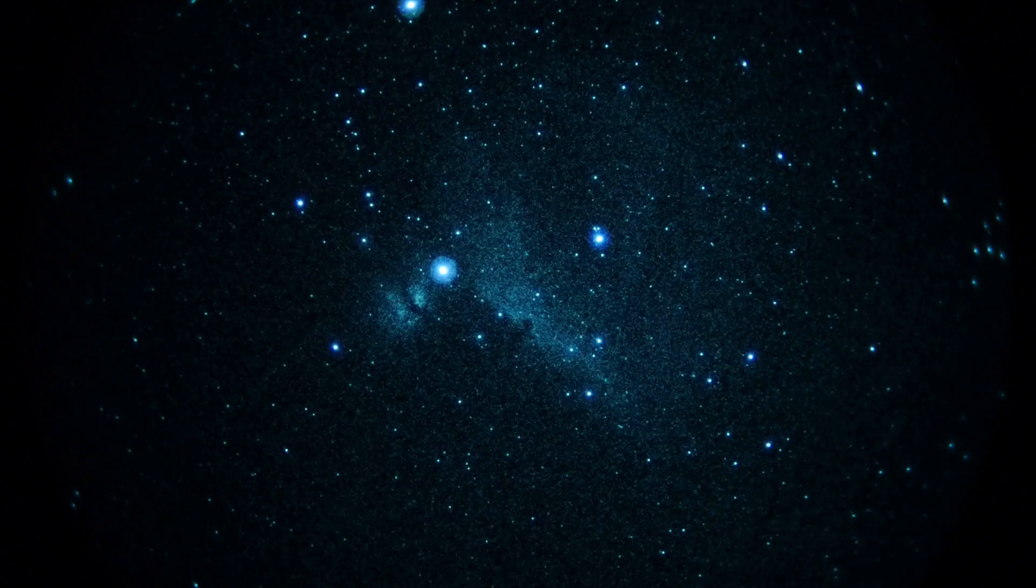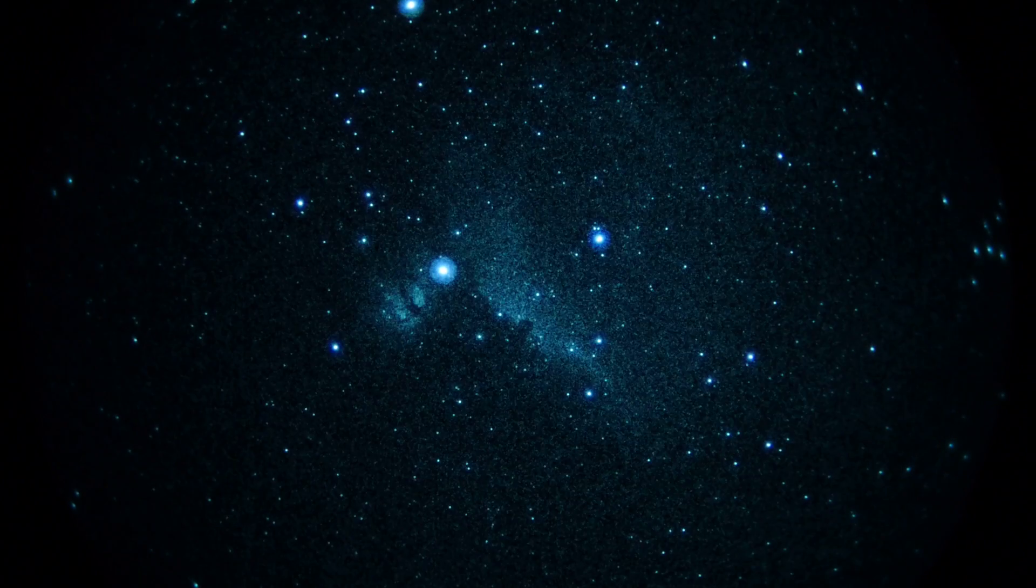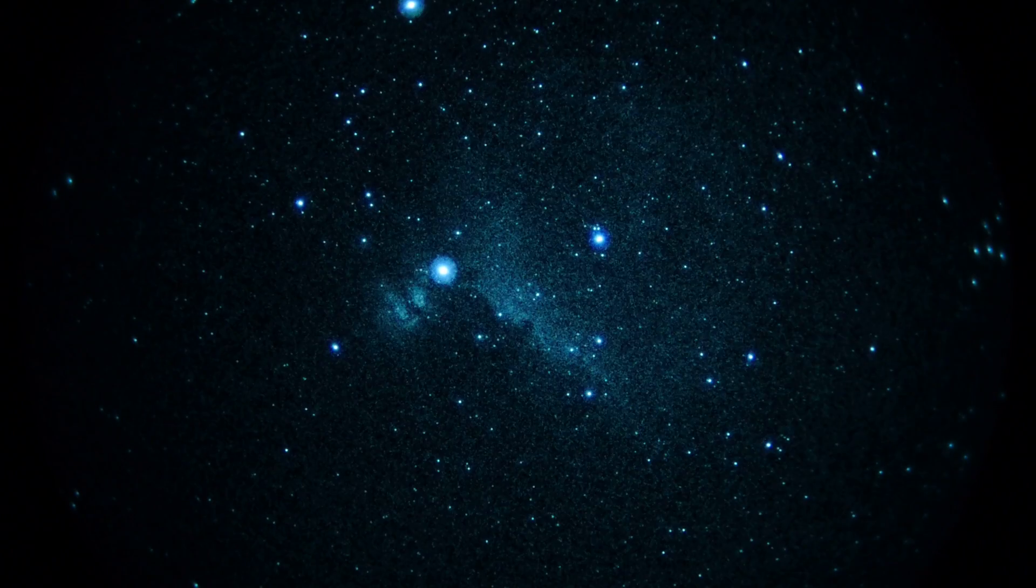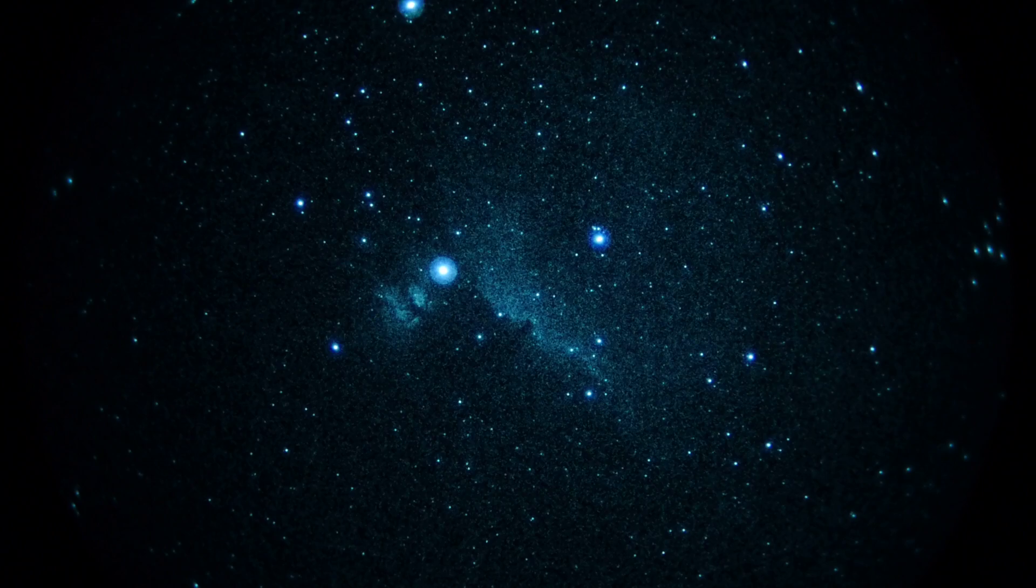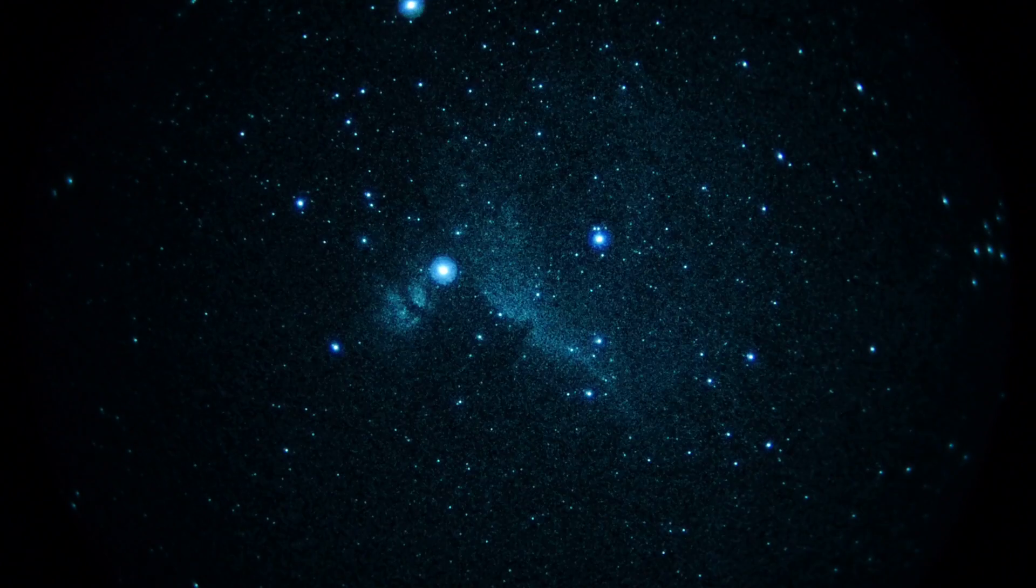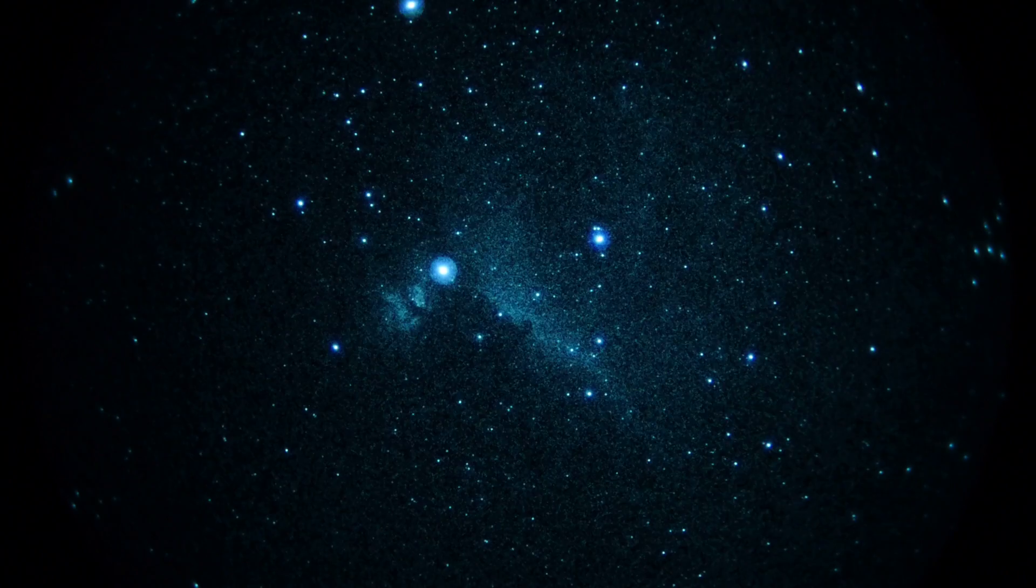And off a little to the left of that, around the star Alnitak I believe, is a nebula called the Flame, which is sort of pointing to the upper left. The dark part of it at least is visible there.